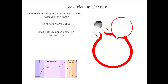During ventricular ejection, the pressure in the ventricle is greater than in the aorta so blood is leaving. The atrioventricular valve remains closed. Blood is rapidly ejected from the ventricle, as depicted by the rapidly decreasing volume on the graph. Initially flow is rapid because the ventricular pressure is so much greater than the aorta, but toward the end it slows down. The valve remains open due to the inertia of blood pushing forward, so blood continues to leave slowly.